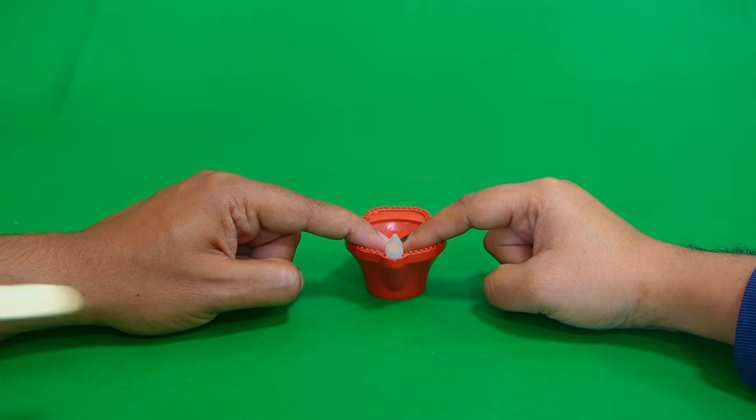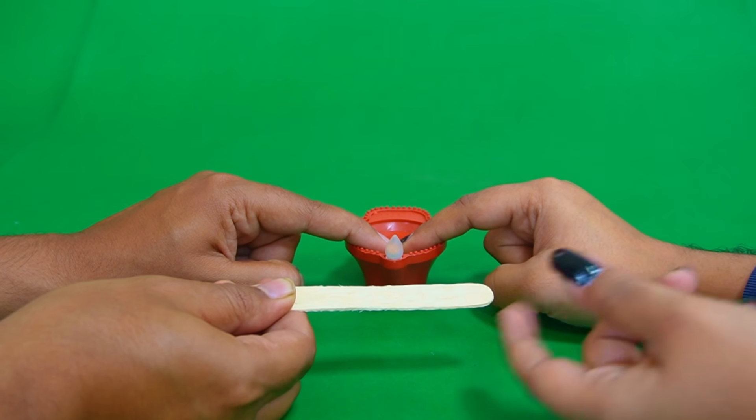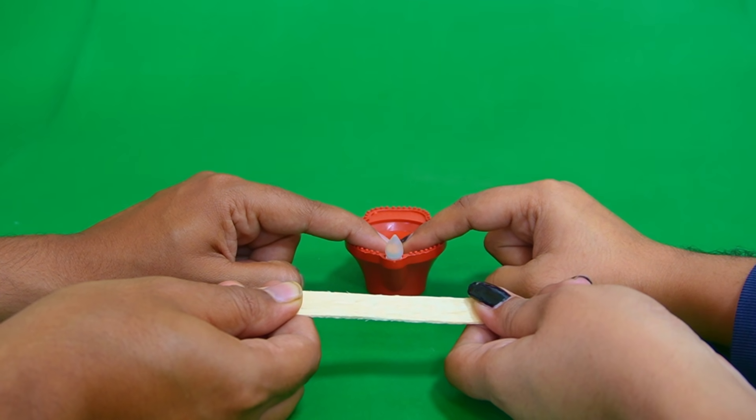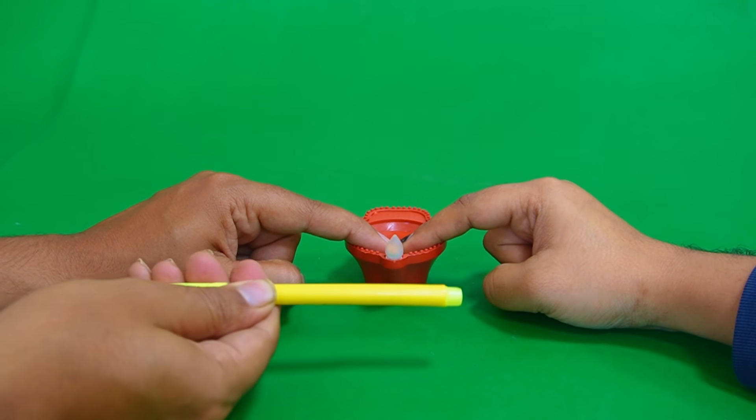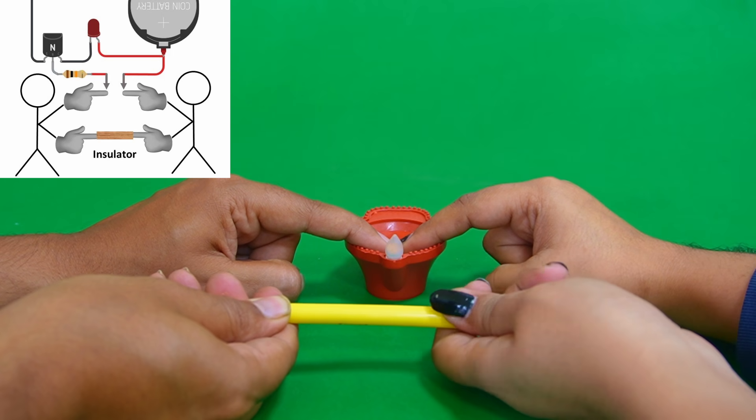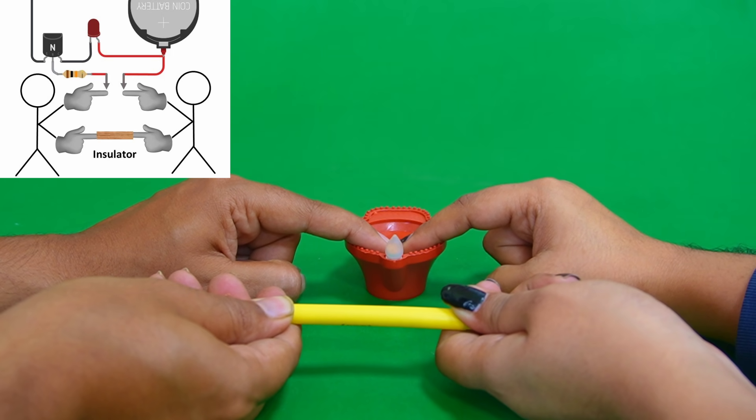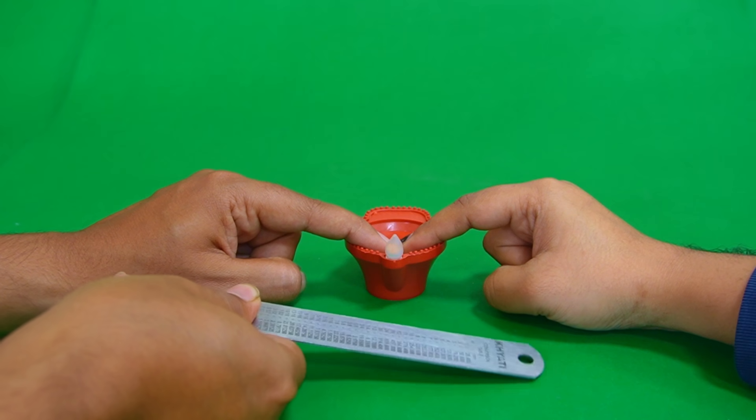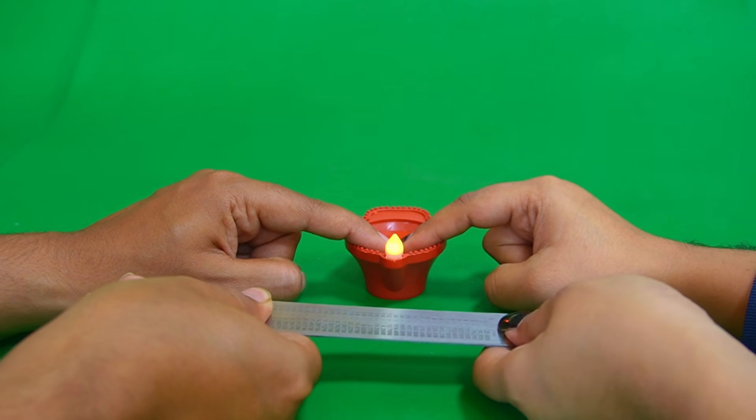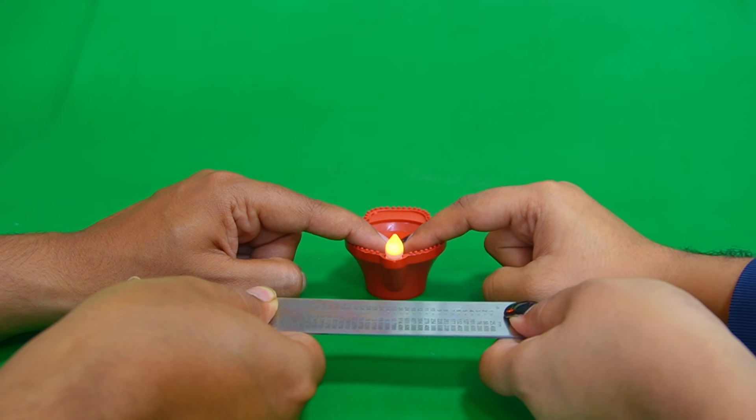But holding an insulator in hands breaks the circuit and lamp doesn't turn on. Holding a conducting material in hands completes the circuit and the bulb turns on as seen.